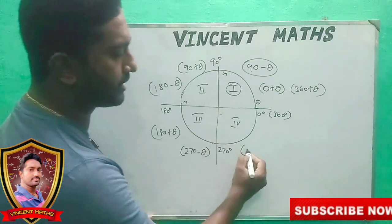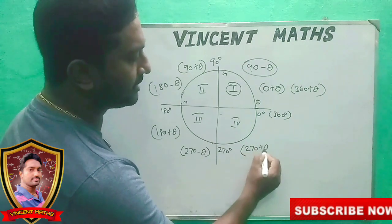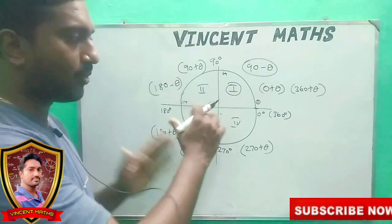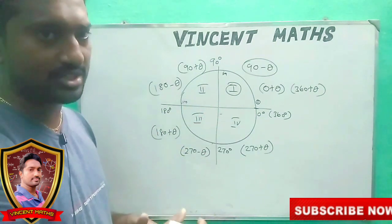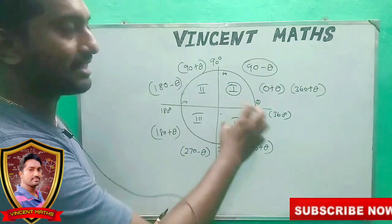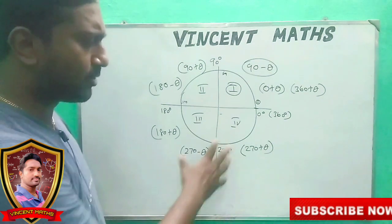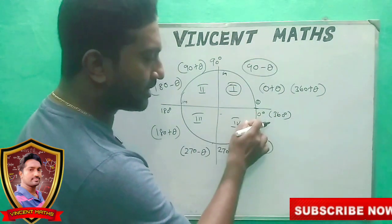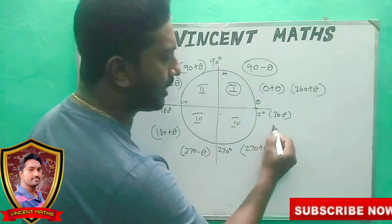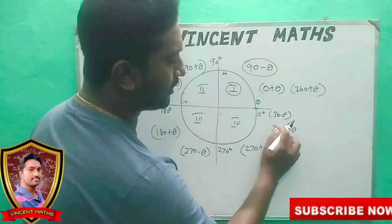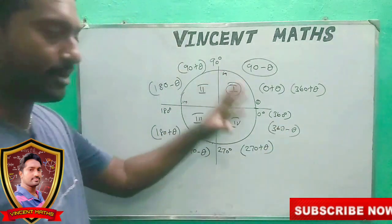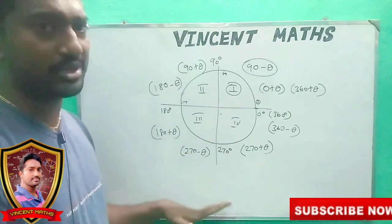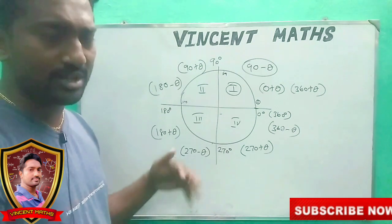In the fourth quadrant, it is 270 plus theta. It's very easy — it's not just theory, friends. So if you don't have to do this, let's go to the next video.